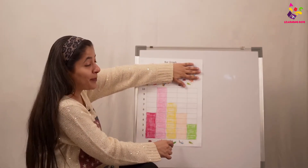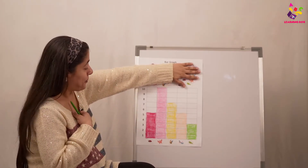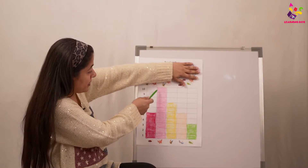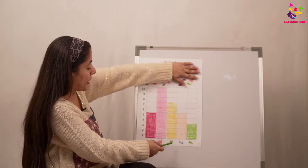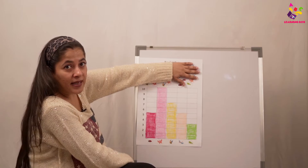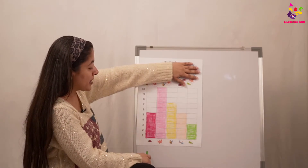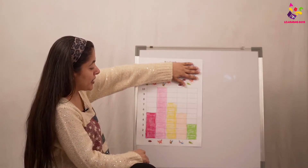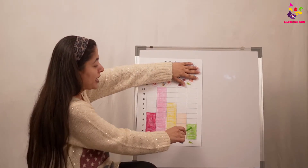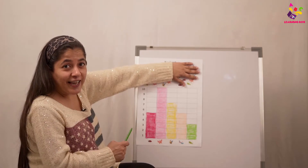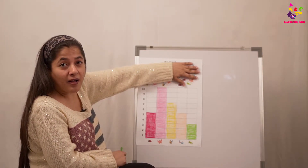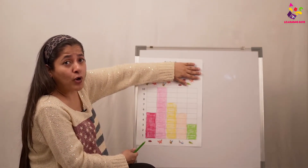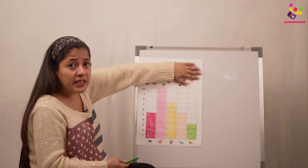Now just imagine — by just looking at the bar graph you can tell: you have five ladybirds because you colored up to five, ten butterflies up to ten, seven bees up to the seventh box, five dragonflies, and three grasshoppers. This is called collection of data. Without sitting and counting, we can just look at the bar graph and tell what we have the most, the least, and which is equal.